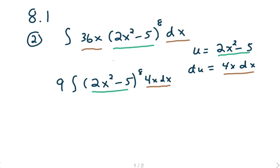Now we know that 9 times 4 is 36, so let's break that 36 apart. We'll put the 9 out front of the integral. We have an integral then of 2x squared minus 5 to the 8th power, and put that 4x dx at the back. And now we're perfectly set up for a u substitution.